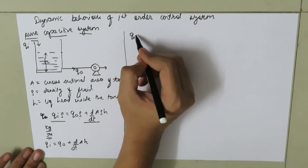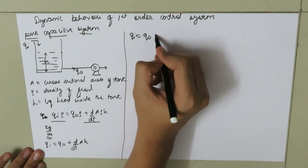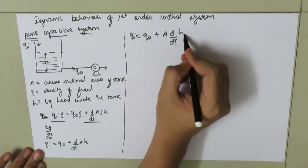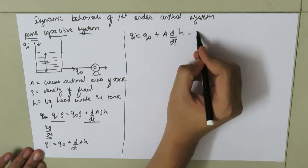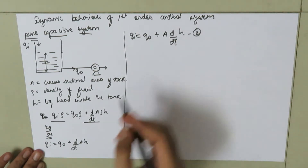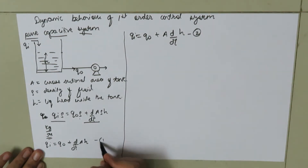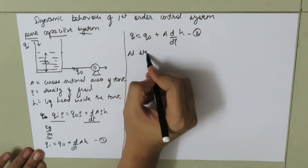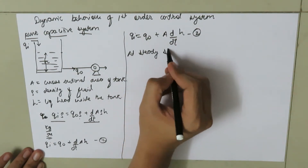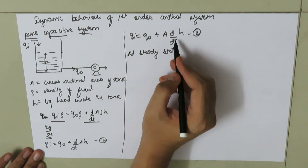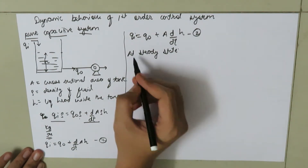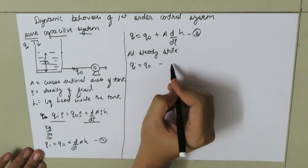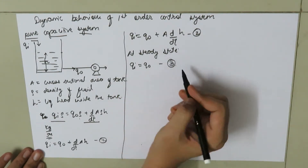So qi equals qo plus A times dh/dt. Let's call this equation number two. At steady state we know that dh/dt equals zero, so qi equals qo. Let's call this equation number three.